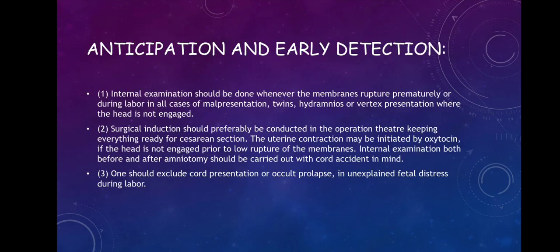Anticipation and early detection of a cord accident — specifically cord prolapse or cord presentation — is important. Internal examination should be done whenever the membranes rupture prematurely or during labour in all cases of malpresentation, twins, hydramnios, or vertex presentation where the head is not engaged. Surgical induction should preferably be conducted in the operation theatre, keeping everything ready for caesarean section. Uterine contractions may be initiated by oxytocin if the head is not engaged prior to rupture of the membranes.